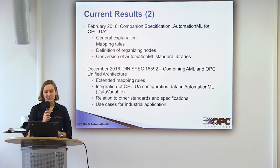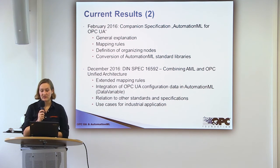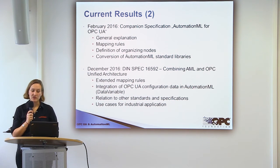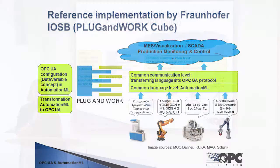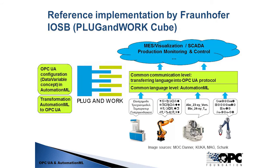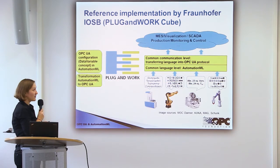Additionally, there are use cases defined for industrial applications where the combination of both standard series makes sense in the future. We also have one reference implementation done by the Fraunhofer IOSB, the Plug and Work Cube, which integrates on the one hand the OPC UA configuration information in the AutomationML model of the production system, and on the other hand the transformation of AutomationML to OPC UA information models.